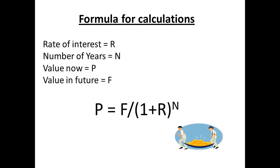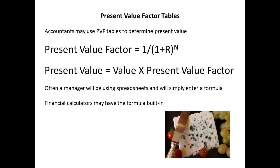You are probably already aware that we have a simple formula here. If we let R equal the rate of interest, N equal the number of years, P equals present day value, and F equals future value, then P is equal to F divided by (1+R) to the power of N. Accountants will make use of the idea of present value factor, so that present value is determined by taking the value and multiplying by the present value factor, or PVF. The PVF is equal to 1 divided by (1+R) to the power of N.